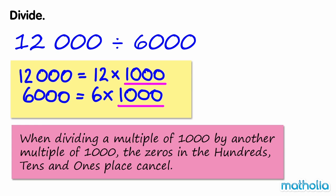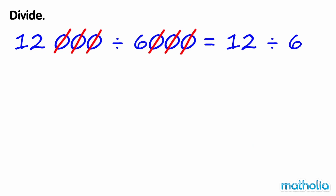When dividing a multiple of 1,000 by another multiple of 1,000, the zeros in the hundreds, tens, and ones place cancel. So 12,000 divide 6,000 is equal to 12 divide 6. 12 divide 6 equals 2. So 12,000 divide 6,000 also equals 2.